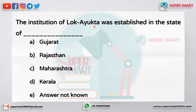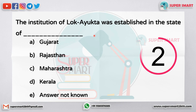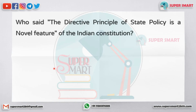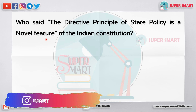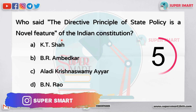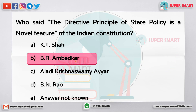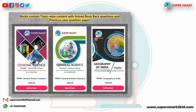The Institute of Lokayukta was established in the state of dash — the answer is Maharashtra. Who said the directive principle of state policy is the novel feature of the Indian Constitution? The answer is Dr. B.R. Ambedkar.